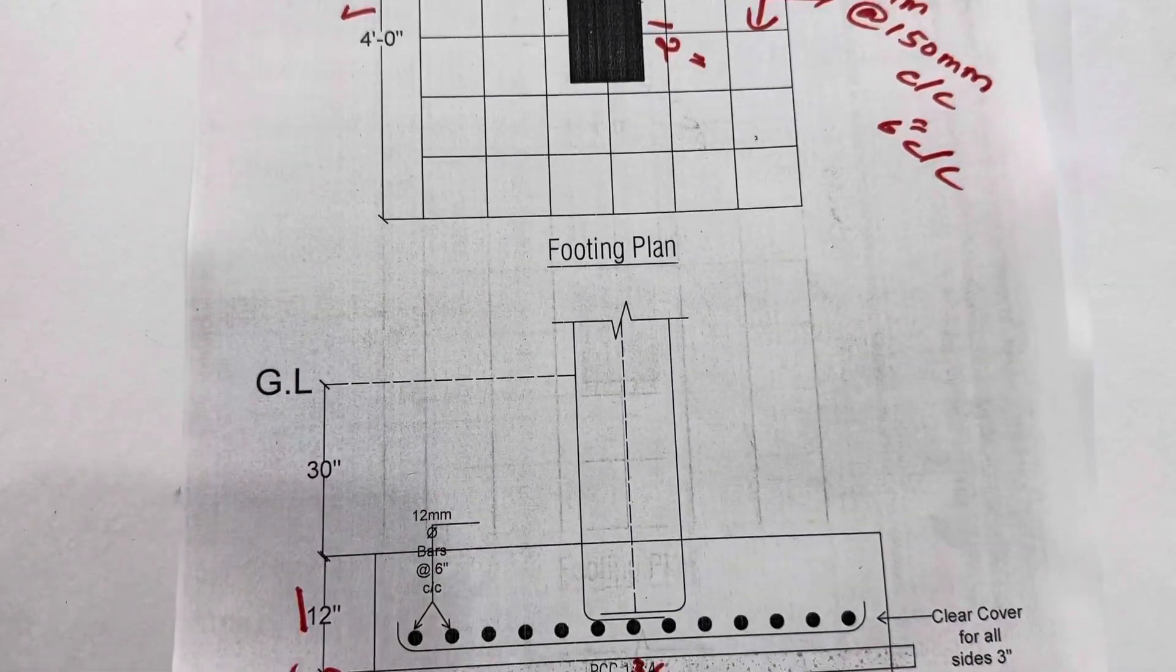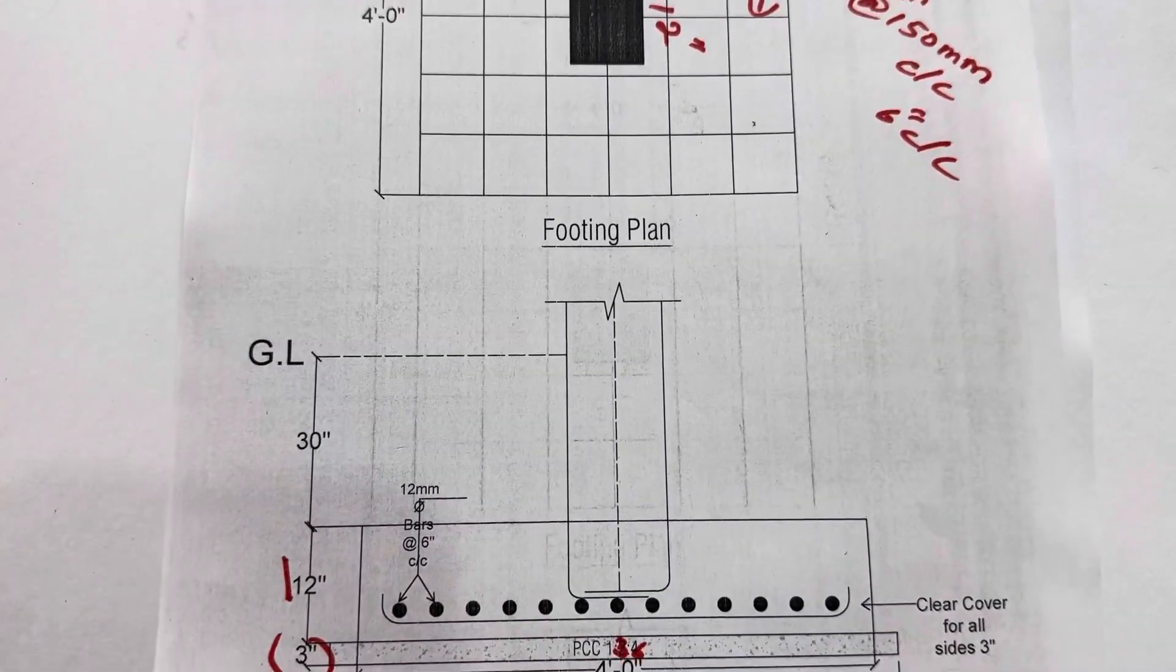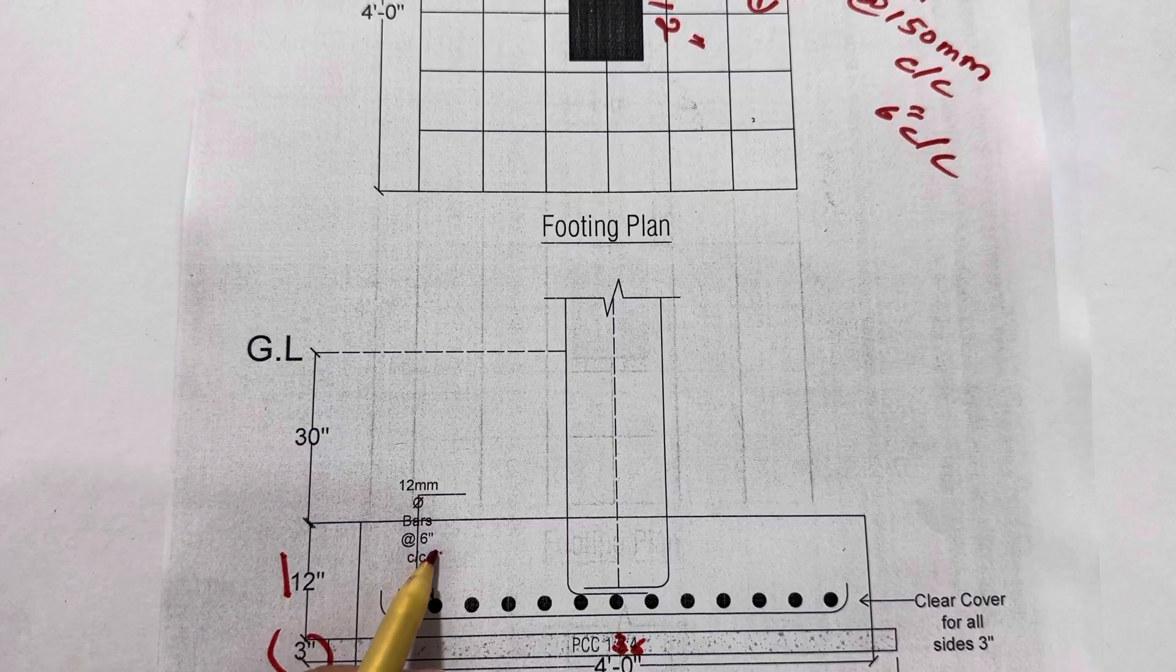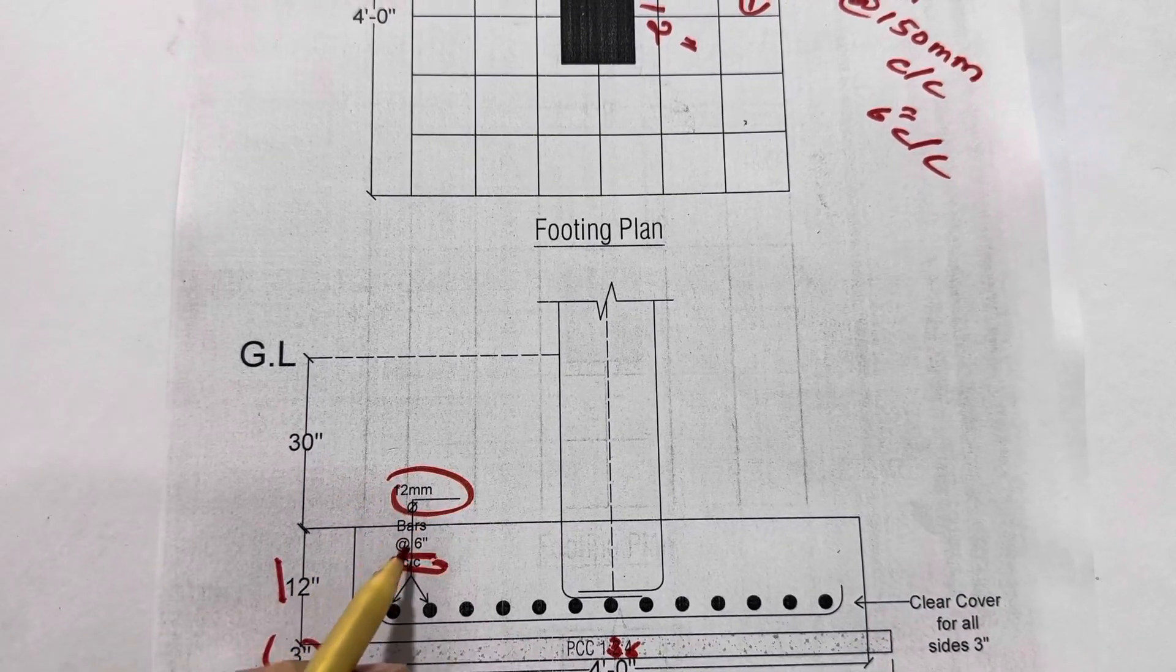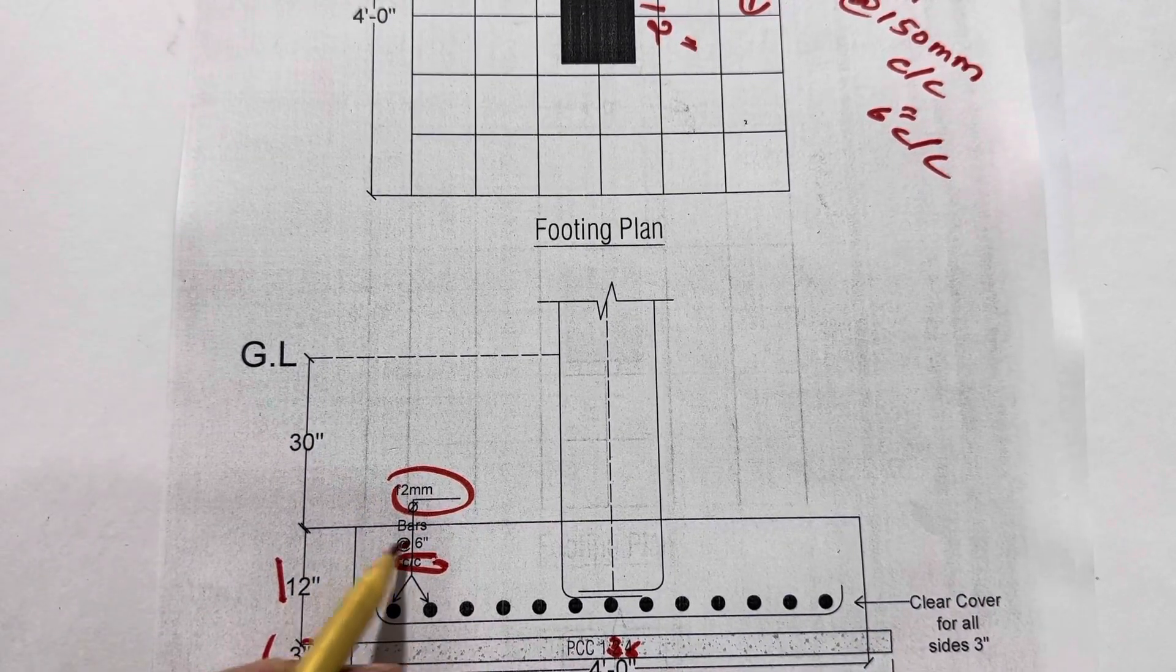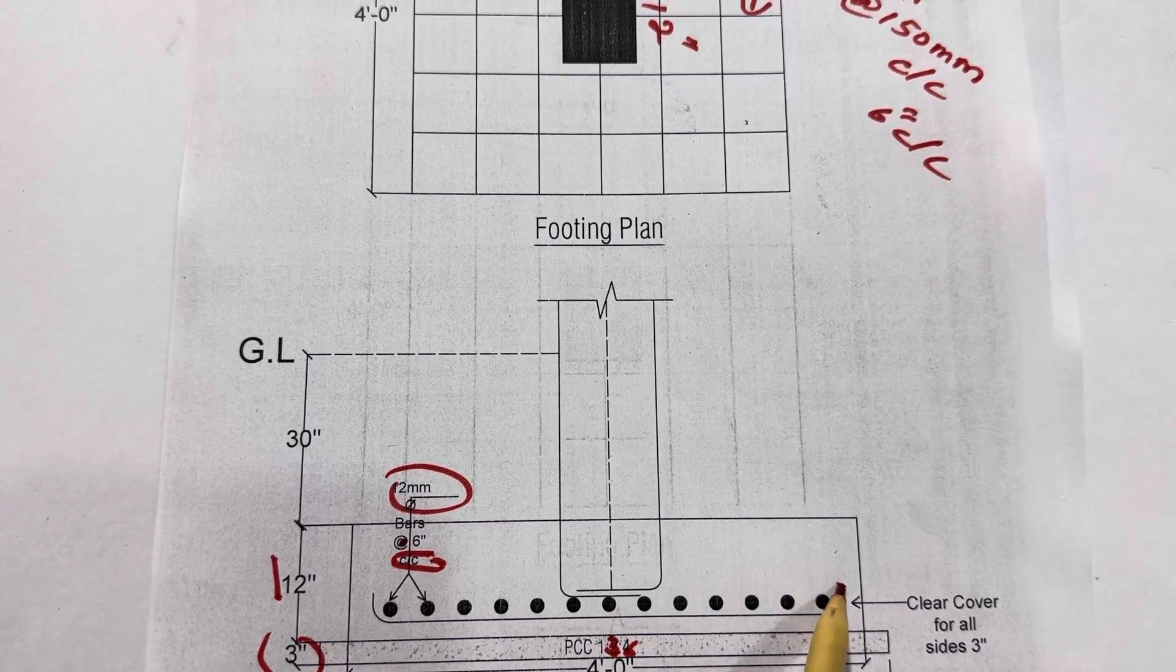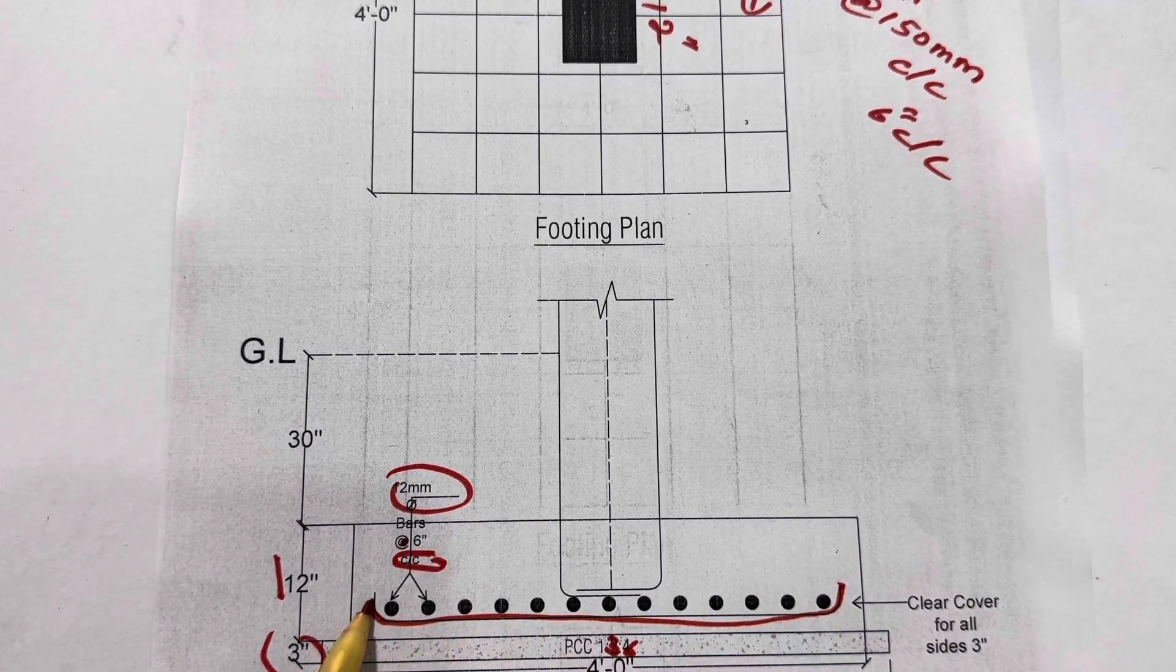Because this is single layer, we didn't provide the double layer. So here, if you see, the spacing is 6 inches center to center, 8 millimeter diameter bar. You can see this is the hook.